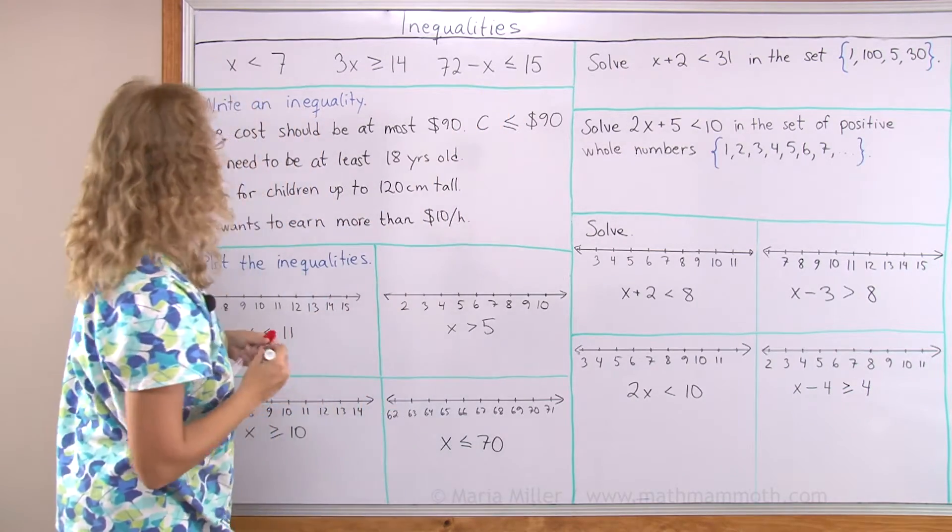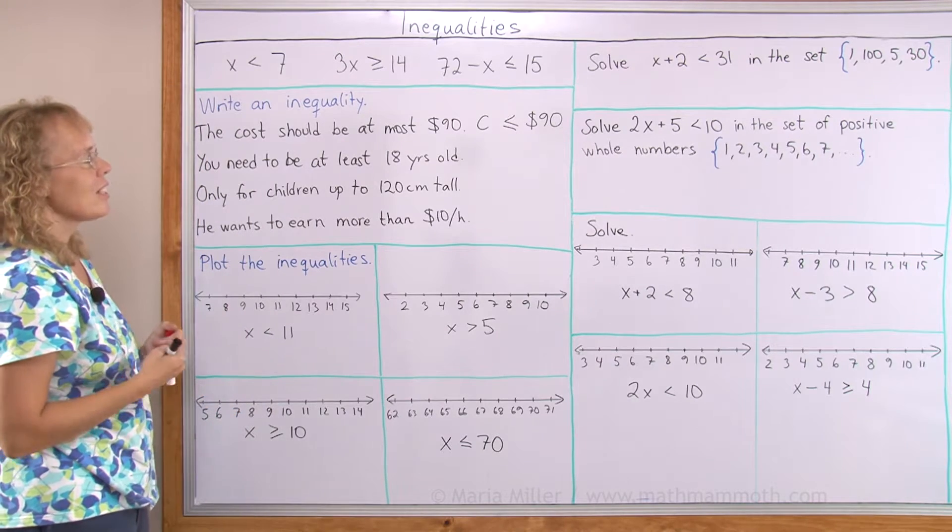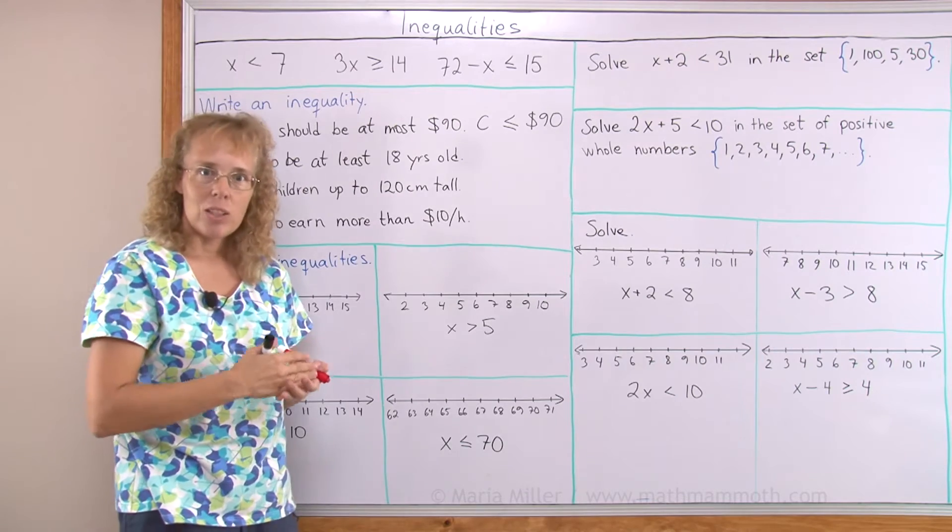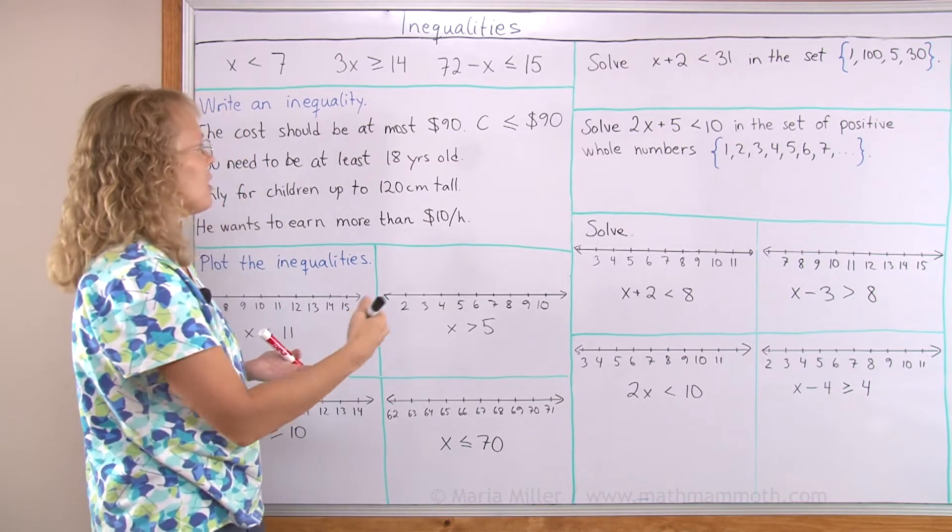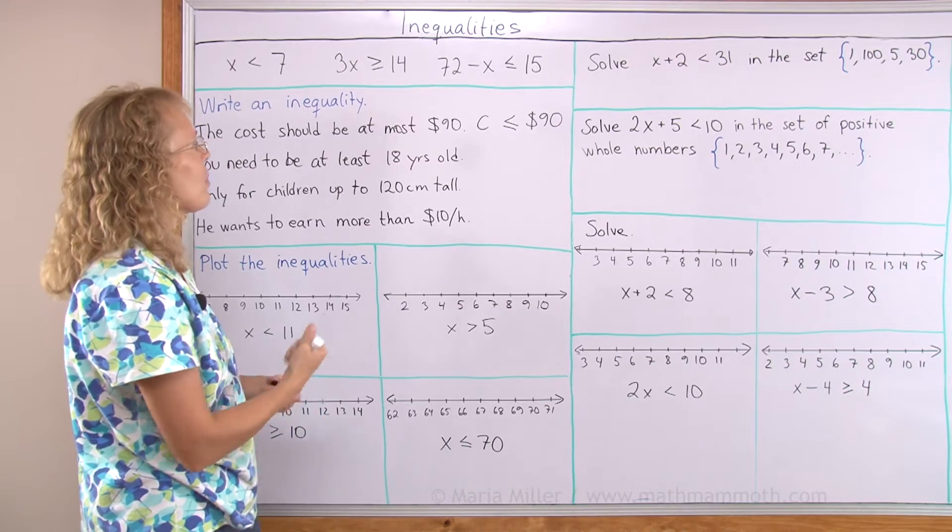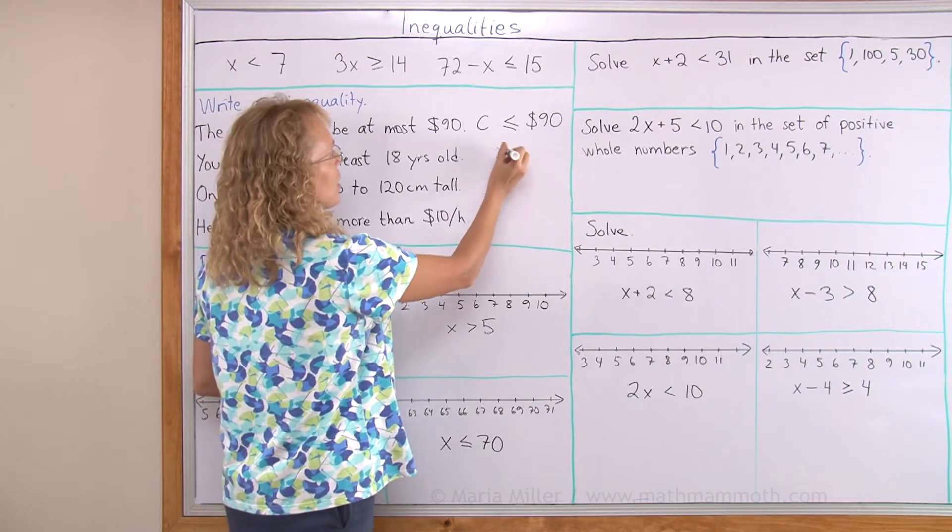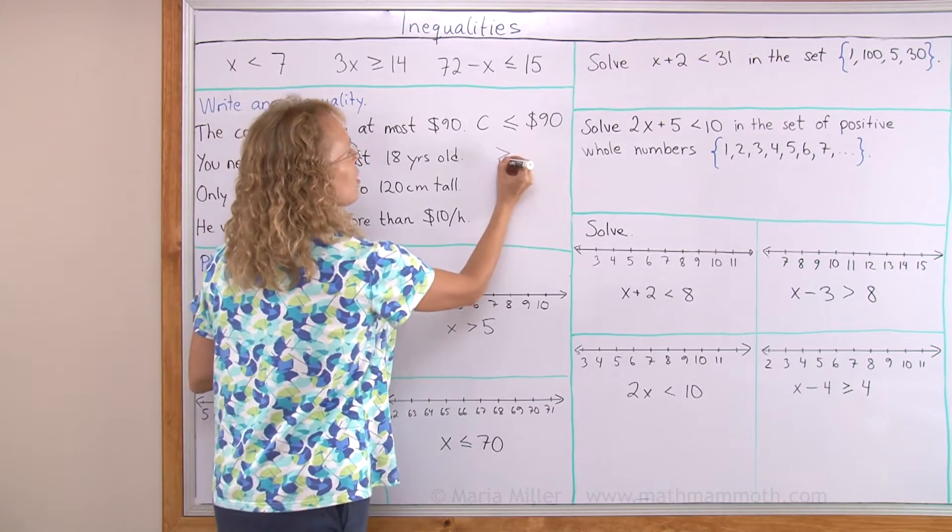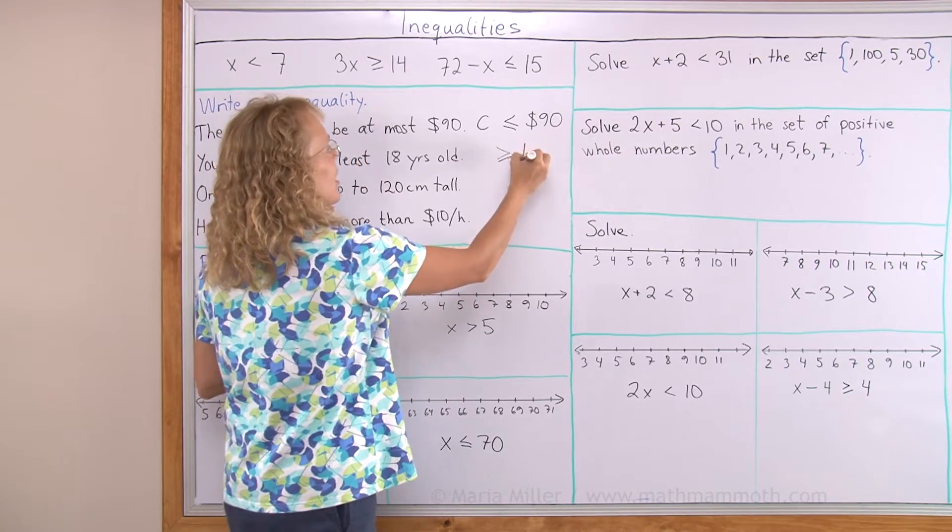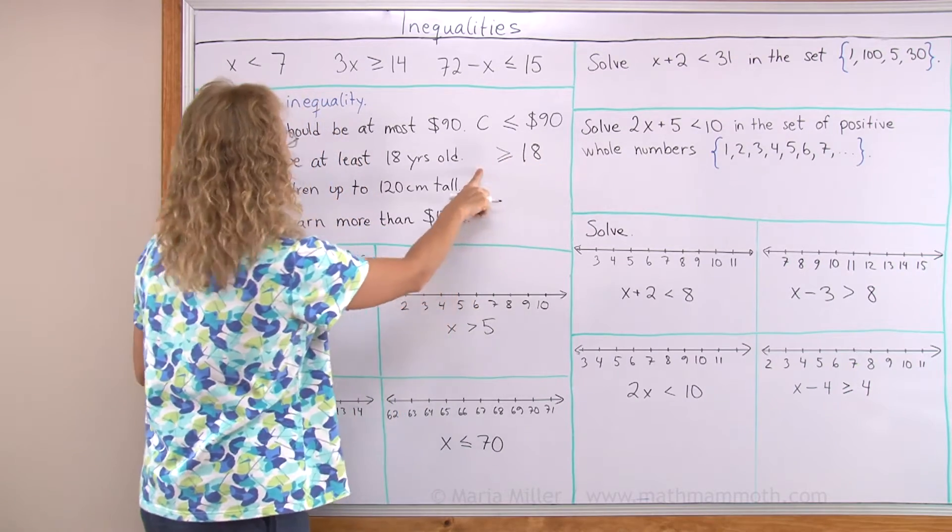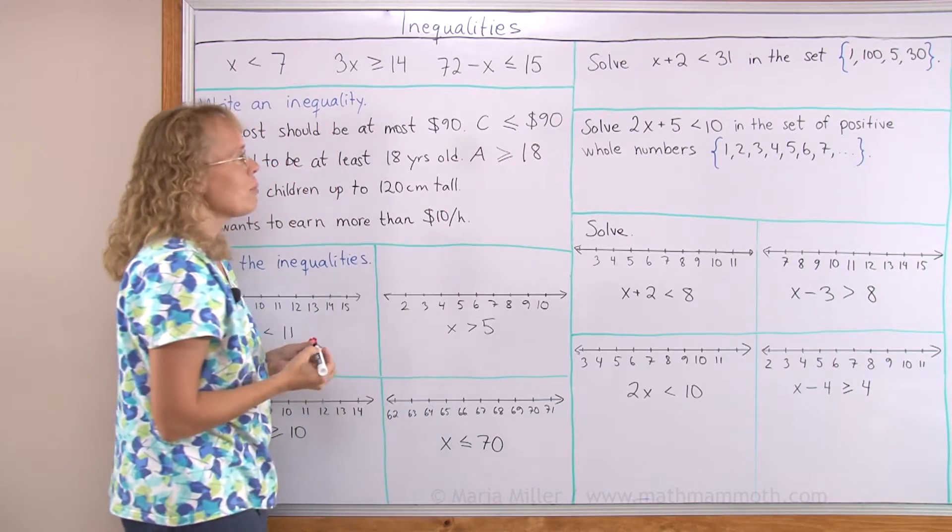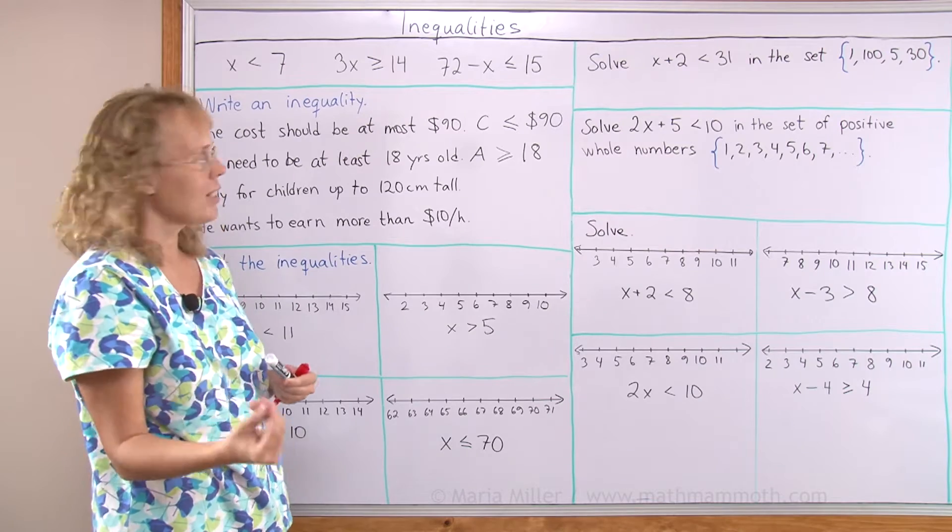You need to be at least 18 years old. At least 18 years old means 18 or more right? 18, 19 and so on. So we will use this sign greater than, but 18 will work too so we will put the or equal here and 18 here. And then a variable, it's an age so I'll put A. Age has to be greater than or equal to 18.